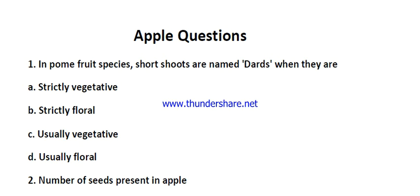Hello everyone, welcome to my YouTube channel AgriQuiz. Today I am going to discuss 20 important questions on apple. Question number one: in pome fruit species, short shoots are named spurs when they are strictly vegetative. The right answer is strictly vegetative.